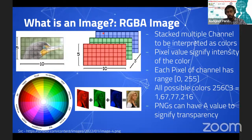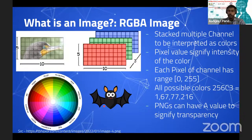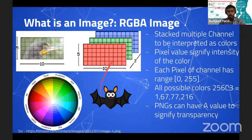The Alpha channel is common in PNG images and controls transparency. It ranges from 0 to 255 — if fully transparent, you can see the background behind the image. This allows creating circular or irregular-shaped images by setting certain pixels to be transparent. So an RGBA image has four channels, each from 0 to 255, where the alpha channel determines how much transparency to apply at each pixel.